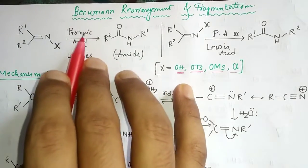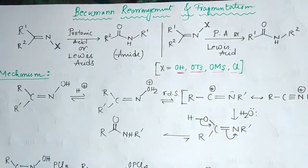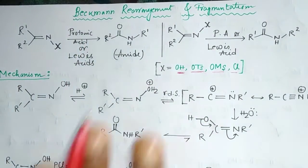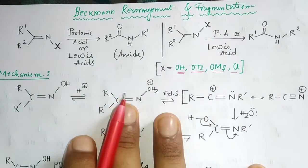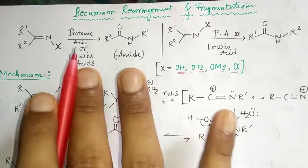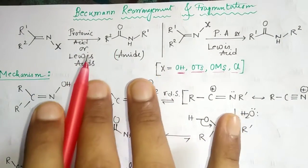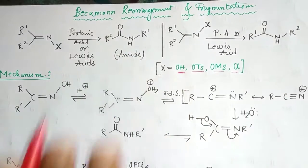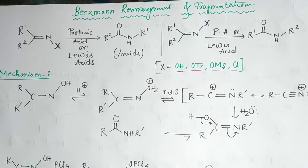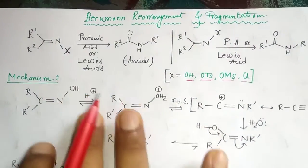The reagent used is a protic acid or any kind of Lewis acid — basically H₂SO₄ as your protic acid, or any Lewis acid like BF₃.